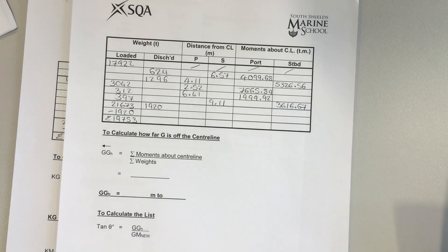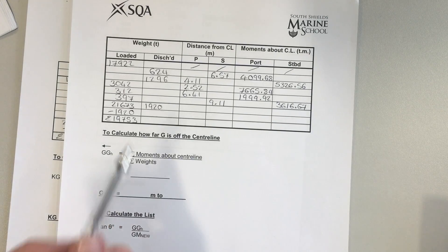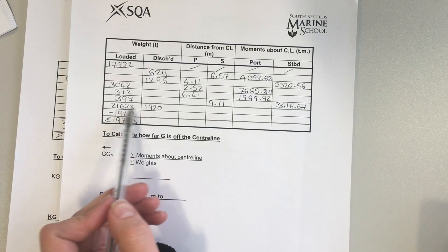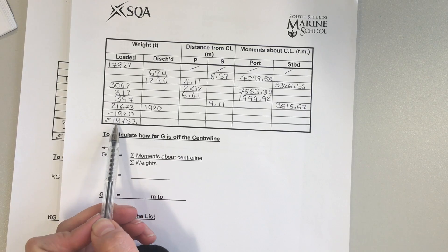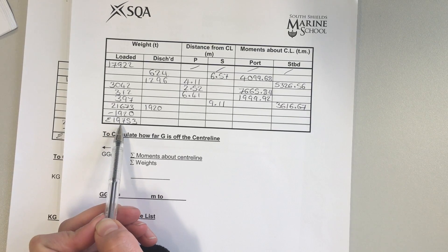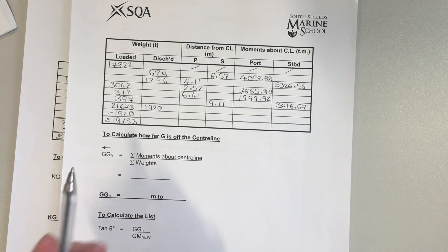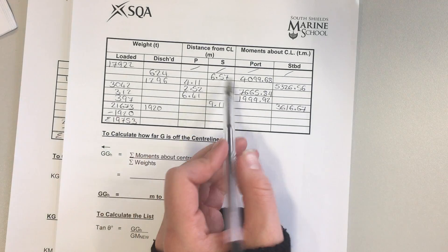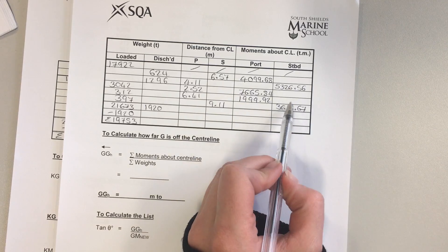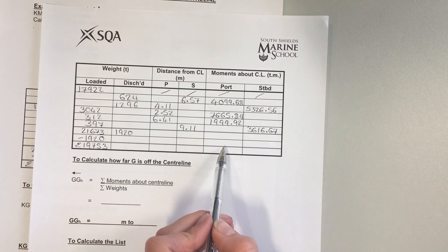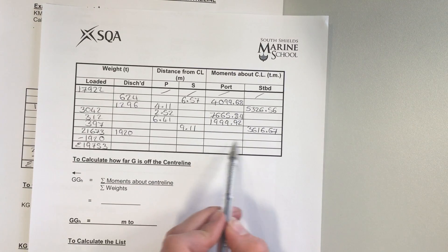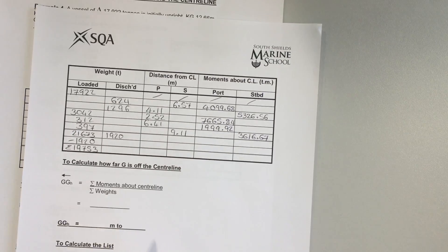It's the same vessel as before, so our subtotals of weights will be the same and our total displacement will be the same. We add up the total moments — moments to starboard added with the moments to port — to get the subtotal in each column.